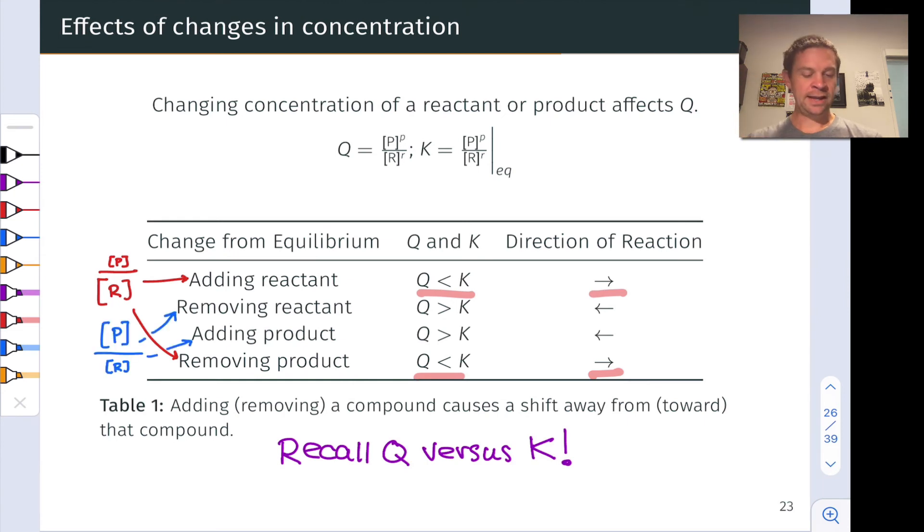On the other hand, if I start with the system in equilibrium, Q equal to K, and I remove reactant or add product, now the numerator has increased relative to the denominator in the equilibrium situation. In other words, Q has increased relative to the equilibrium situation. Q is greater than K, and as we've seen previously, this means that the reaction system will spontaneously move in the reverse direction, producing more reactant.